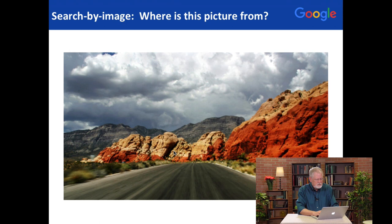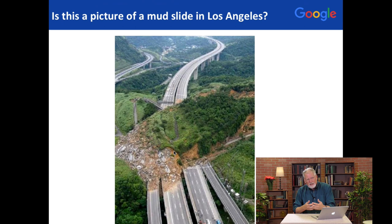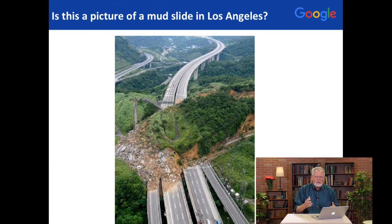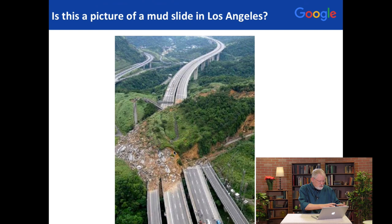So now I want to show you another important use for search by image, and that's to find images whose provenance — whose origin — may not be exactly what you think. I discovered this in a news story about mudslides in Los Angeles. Here's a mudslide supposedly destroying freeways in Los Angeles. I'm from Los Angeles, and I looked at this and thought, I don't recognize this place. So I was skeptical. What can we do to actually try to verify that? Let's see if we can get some additional metadata about this image.